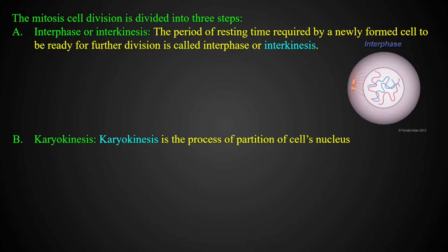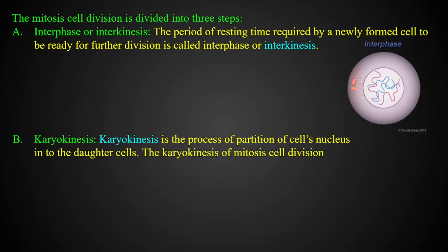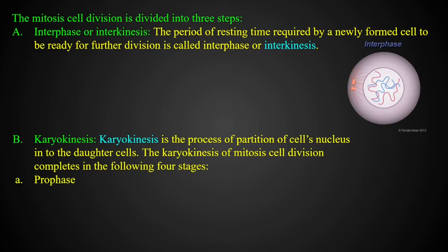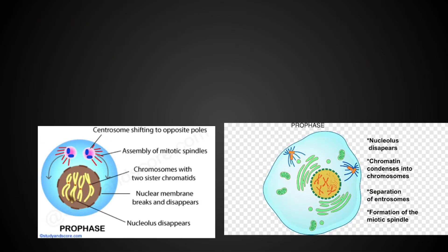The next phase is karyokinesis, which is the process of partition of the cell nucleus. Karyokinesis is where the nucleus divides, and cytokinesis is where the cytoplasm divides. Karyokinesis is completed in four stages: prophase, metaphase, anaphase, and telophase.